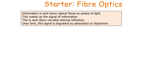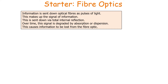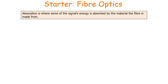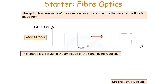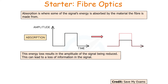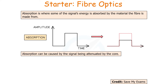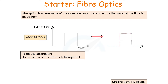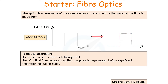While the light signal travels down the fibre optic via total internal reflection, over time the signal is degraded by absorption or dispersion, which can cause information to be lost. Absorption is where some of the signal's energy is absorbed by the material the fibre is made from, resulting in the amplitude of the signal being reduced, which can lead to a loss of information. Absorption can be caused by the core scattering or absorbing the light energy. To reduce absorption, we use a core which is extremely transparent, or we use optical fibre repeaters which regenerate the pulse of light before significant absorption has taken place, positioned throughout the fibre optic system.